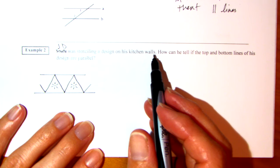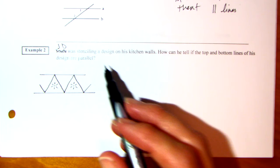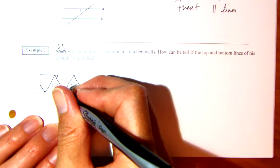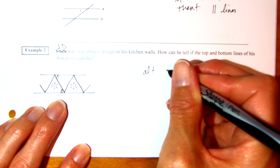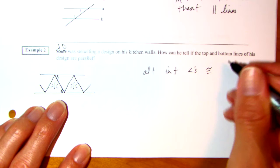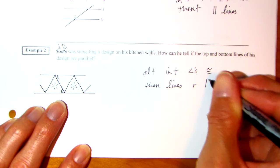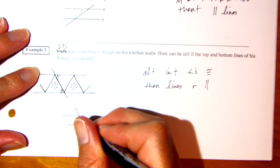JD was stenciling a design on his kitchen walls. How can you tell if the top and bottom lines of his design are parallel? What you can do is measure this angle with your protractor and this angle — those are alternate interior angles. If they're congruent, then the lines are parallel. You have this line and this line, and you look at the transversal. Measure that angle and this angle — if those are congruent, the lines are parallel.